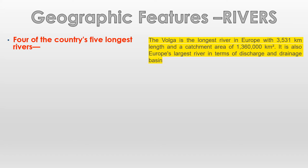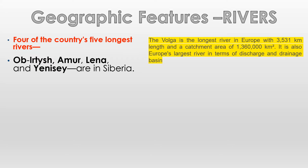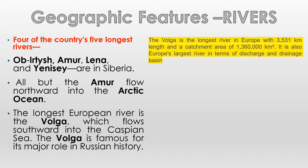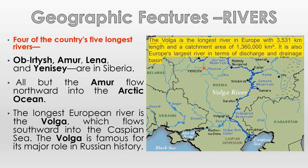The major rivers of Russia — Ob, Irtysh, Amur, Lena, and Yenisei — are in Siberia. All but the Amur flow northward into the Arctic Ocean. The longest European river is the Volga, which flows southward into the Caspian Sea. The Volga is famous for its major role in Russian history. It is the longest river in Europe at 3,531 kilometers in length, and also Europe's largest river in terms of discharge and drainage basin. You can pause my video and see the map of the Volga River.